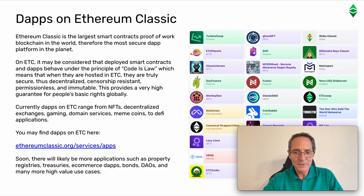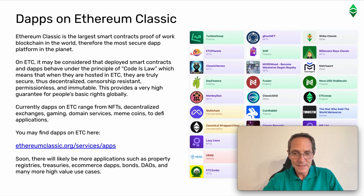On ETC, deployed smart contracts and dApps behave under the principle of CODE IS LAW, which means that when they are hosted in ETC, they are truly secure, decentralized, censorship resistant, permissionless, and immutable. This provides a very high guarantee for people's basic rights globally. Currently, dApps on ETC range from NFTs, decentralized exchanges, gaming, domain services, and meme coins to DeFi applications. You may find dApps on ETC at ethereumclassic.org/services/apps. Soon there will likely be more applications such as property registries, treasuries, e-commerce dApps, bonds, DAOs, and many other high-value use cases.